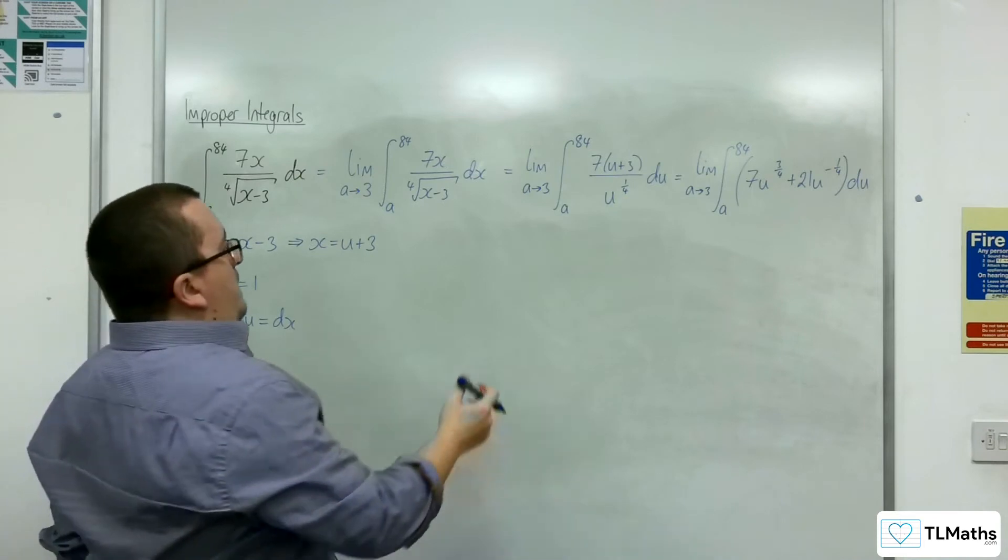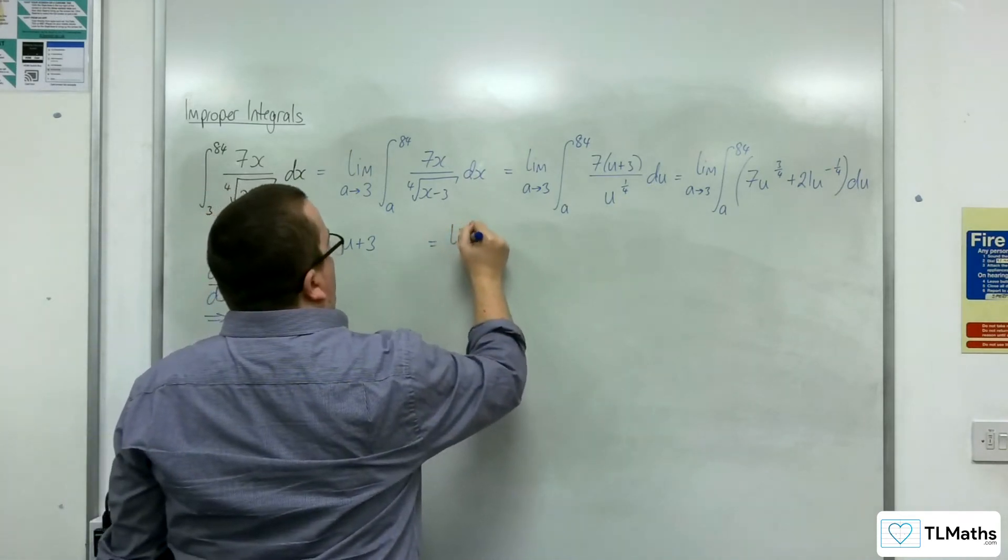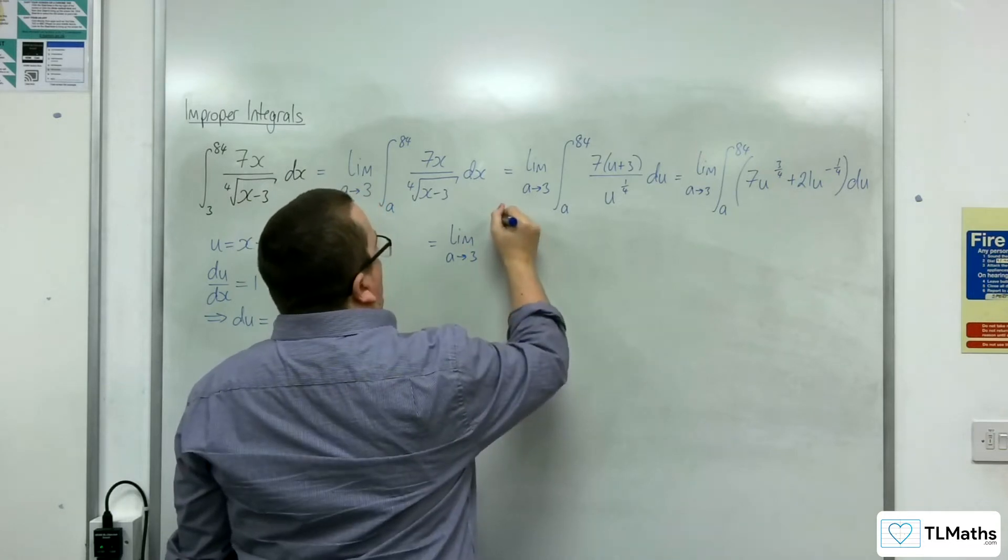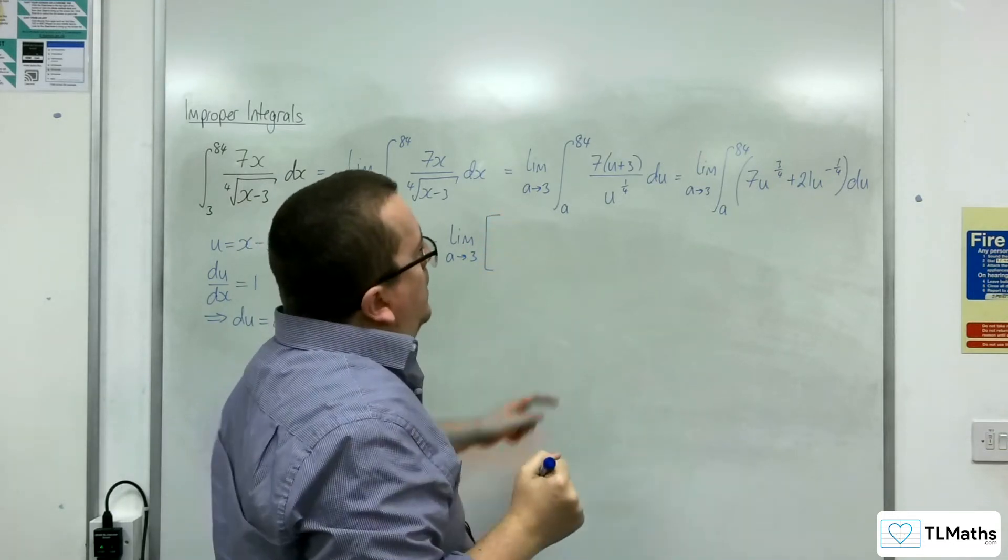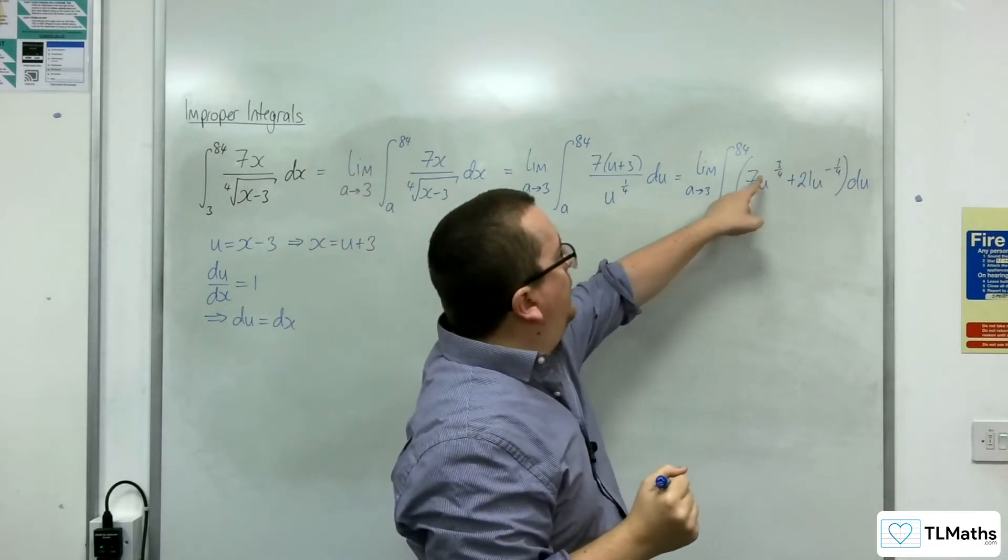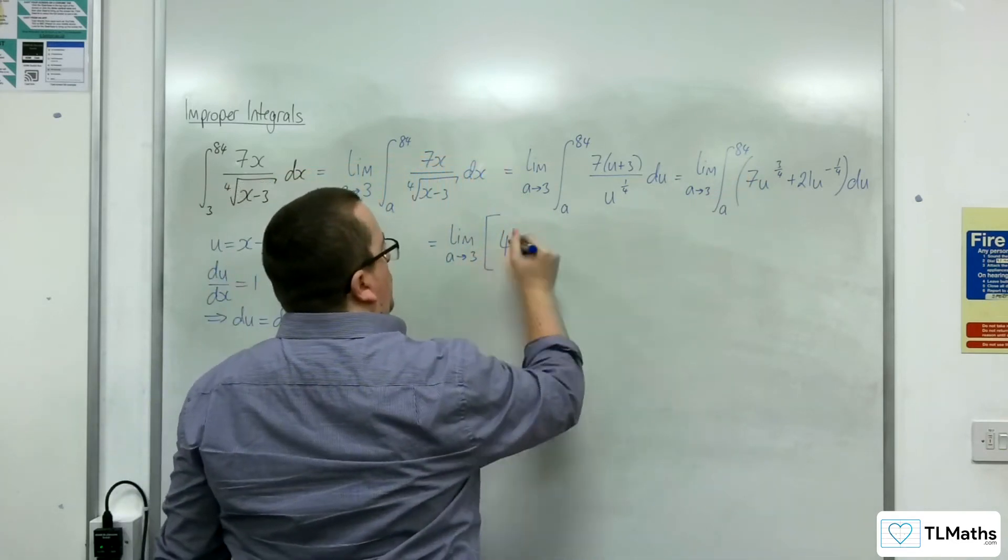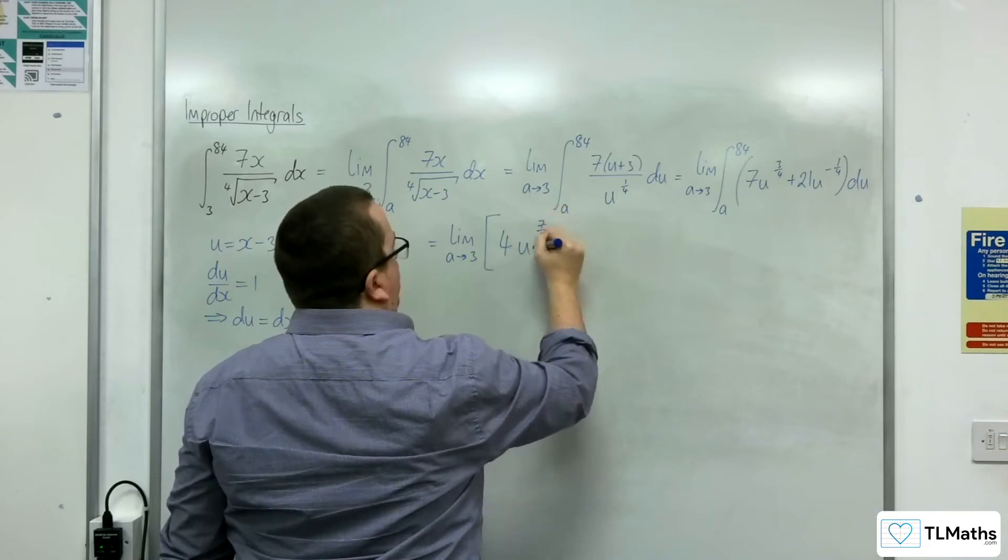Right. Now we can integrate. So we've got the limit as a tends to 3 of, so add 1 to the power, we get 7 quarters. So 4 7ths times 7 is 4, so that's 4u to the 7 quarters.